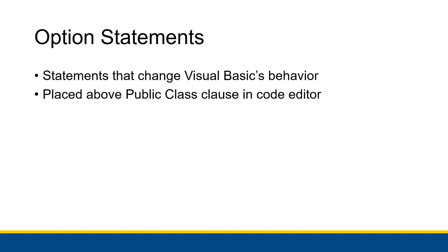Option statements change Visual Basic's behavior. You can specify some options that change some of the rules by which Visual Basic handles your code. You actually place these option statements above the public class clause in the code editor — right at the very top — so that Visual Basic knows how it should handle your code and the rules it should follow when compiling.